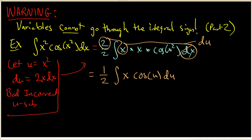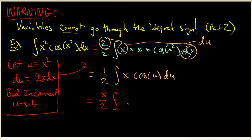At this point, they start saying to themselves: I don't know what to do about that x, so I guess I'll just move it outside the integral. And so the x comes outside, and they're looking at x over 2 times the integral of cosine of u du.